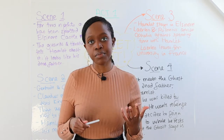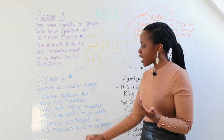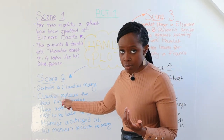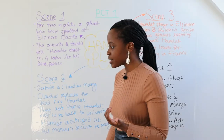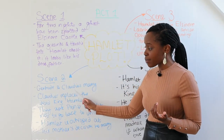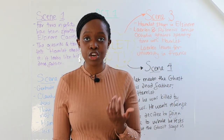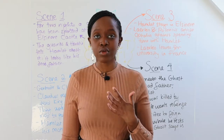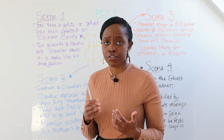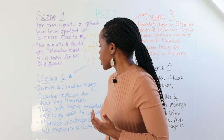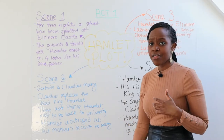In Act One, Scene Two, we learn that Gertrude — Prince Hamlet's mother and a widow, because King Hamlet has died — and King Hamlet's brother Claudius marry. This leads to Claudius becoming the new King of Denmark and leader of Elsinore Castle. They marry fairly quickly, fairly soon after the death of King Hamlet, and Claudius replaces the dead king.